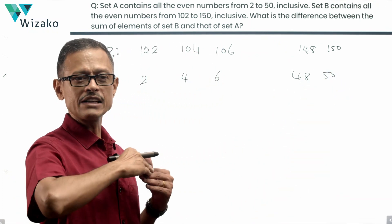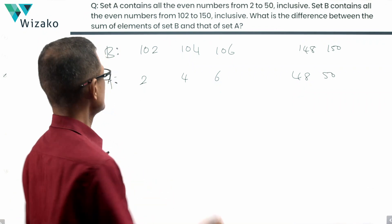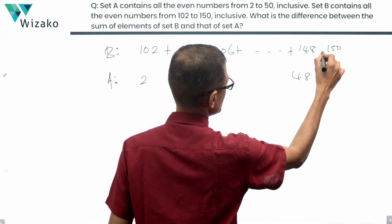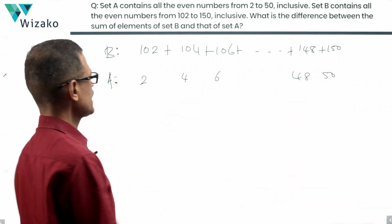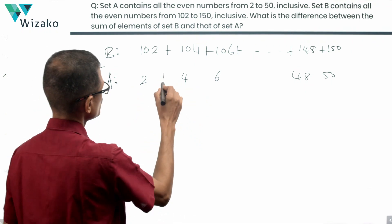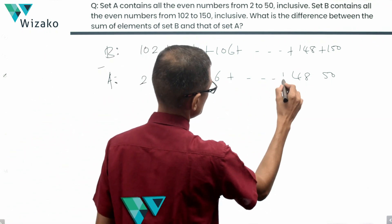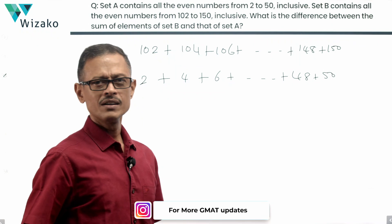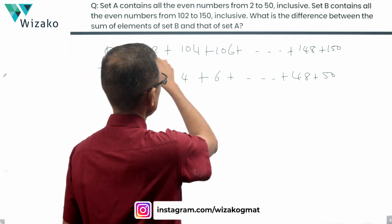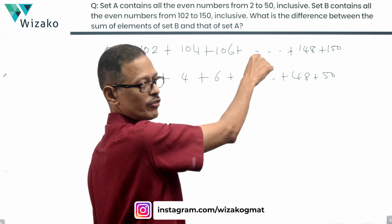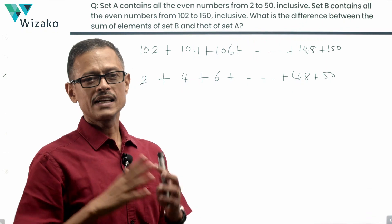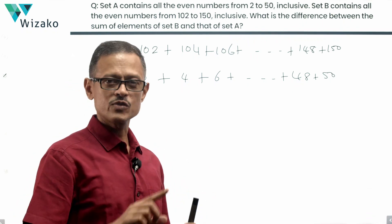What do we have to find out? We need to find the sum of elements of set B, so 102 plus 104 plus 106 all the way up to 148 plus 150. Find this sum and from that subtract the sum of the elements of set A, which is 2 plus 4 plus 6 all the way up to 48 plus 50. As I said, two ways of going about it. In Method 2, what I am going to do is apply the summation of an arithmetic progression formula on the first row, do the same thing for the second row, find the difference between the two and arrive at the answer.